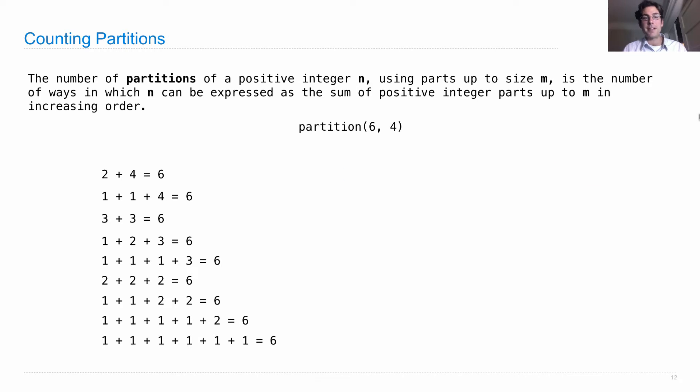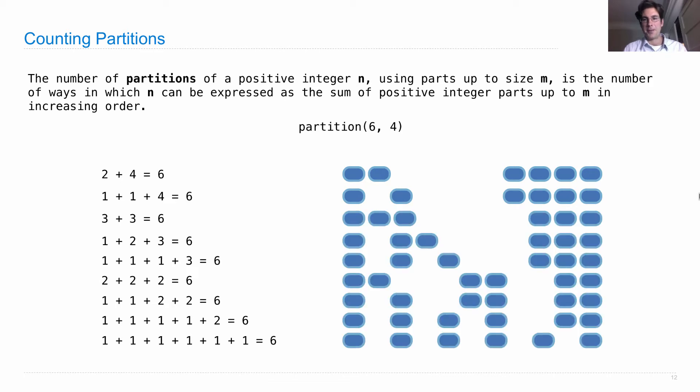And we can visualize all of these. For instance, 2 plus 4, we could think of as 6 things in 2 groups. We have a size 2 partition and a size 4 partition. Or 1 and 1 and 4, etc. So we're going to see all the different kinds.